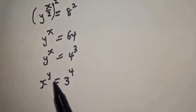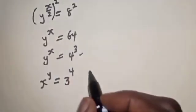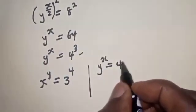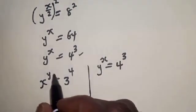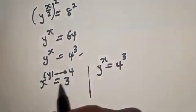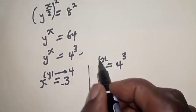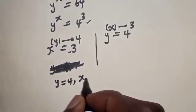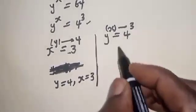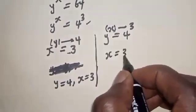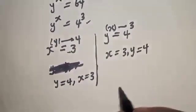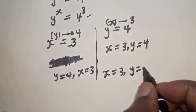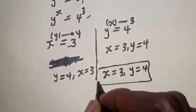Recalling that S raised to power Y equals 3 raised to power 4 and Y raised to power S equals 4 raised to power 3. Comparing the bases and exponents: the exponent on the right is 4 and S equals 3 from the first equation; comparing the second, the exponent is 3 and Y equals 4. Therefore S equals 3 and Y equals 4. These are our final answers: S equals 3, Y equals 4.